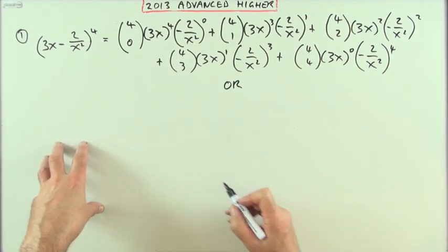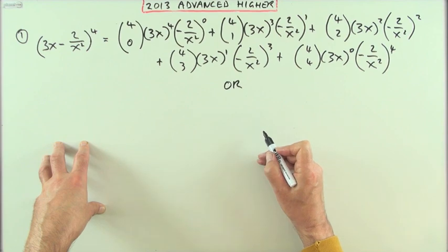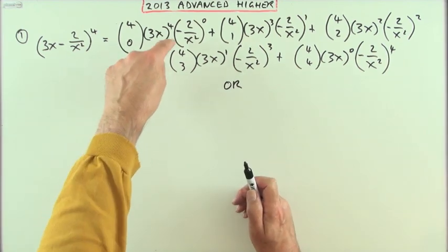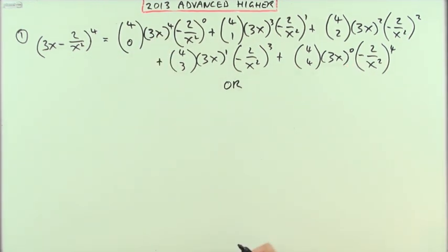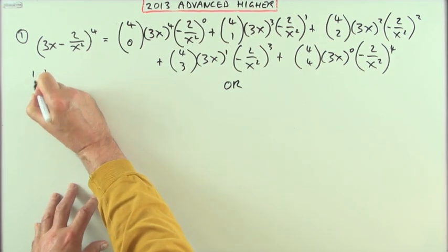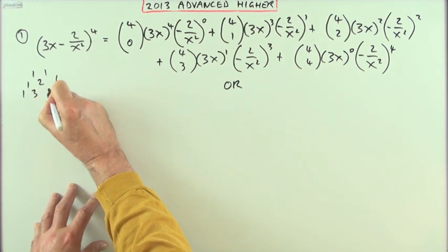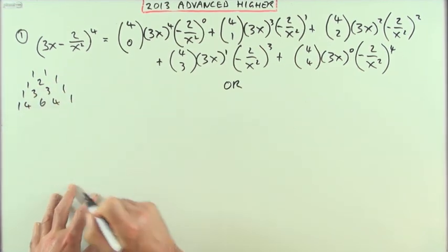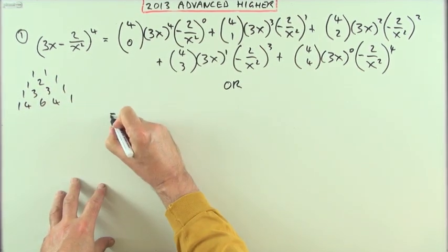An alternative would simply have been to put down the binomial coefficients straight away and maybe not put in a couple of these terms when it's just power zero. So the binomial coefficients would have been one; one, two, one; one, three, three, one; one, four, six, four, one is what I want.